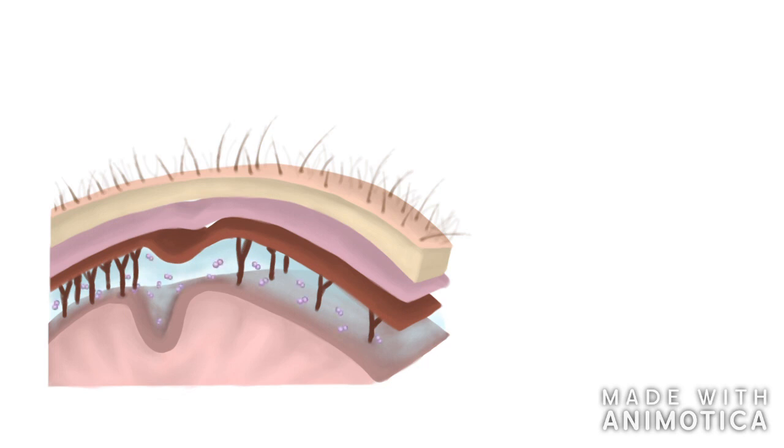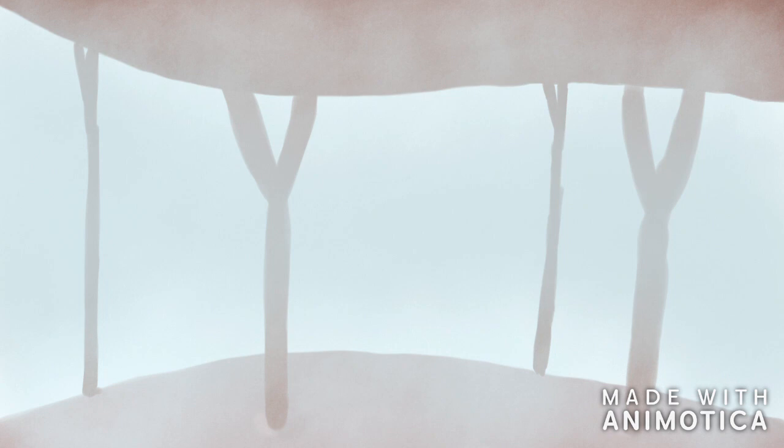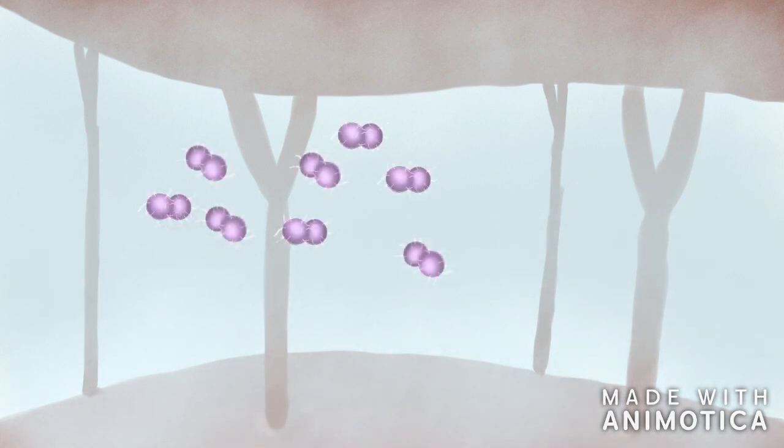Classical bacterial meningitis is most importantly infection of the leptomeninges, with little to no involvement of the dura mater. After passing the blood-brain barrier, Neisseria first enters the subarachnoid space and starts multiplying uncontrollably.